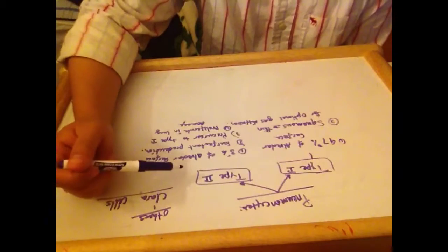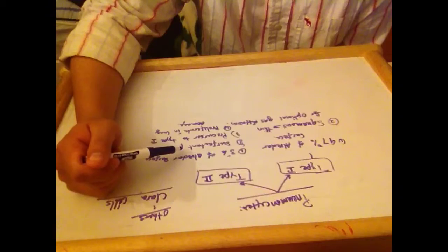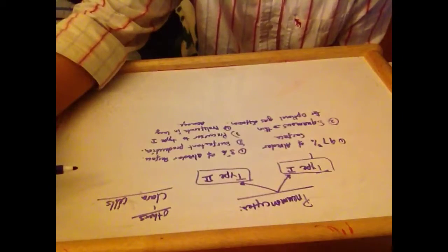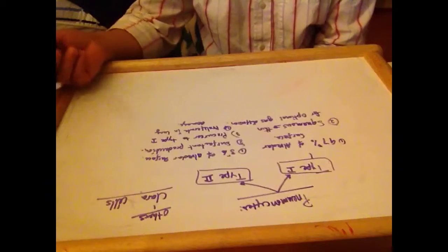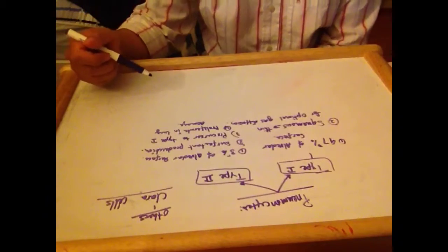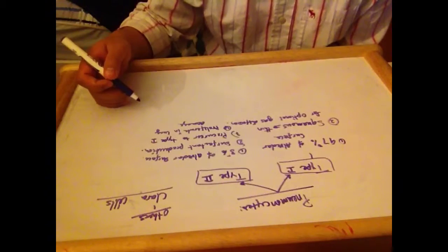The other pneumocyte is Type 2 Pneumocytes. It lines only 3% of the alveolar surface. It produces surfactants, which decrease the surface tension of the alveolar surface.